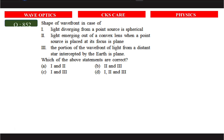The shape of a wavefront in the case of light diverging from a point source is spherical. Light emerging out of a convex lens when a point source is placed at the focus of the lens produces a plane wavefront.